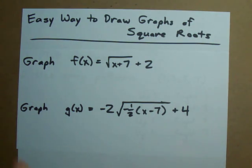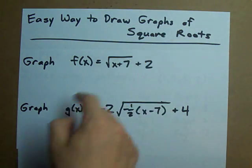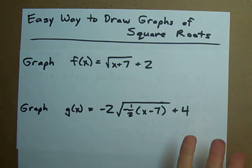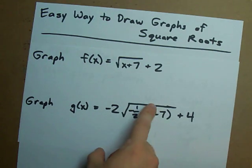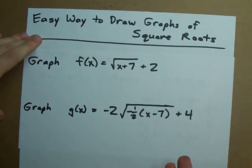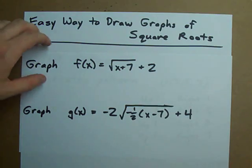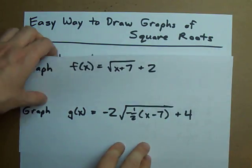Here is an easy way to draw the graph of square root functions. They'll look like this and what makes some square root functions is that there's a square root sign in them. Pretty straightforward. We're going to graph each of these on the same grid with the same process.